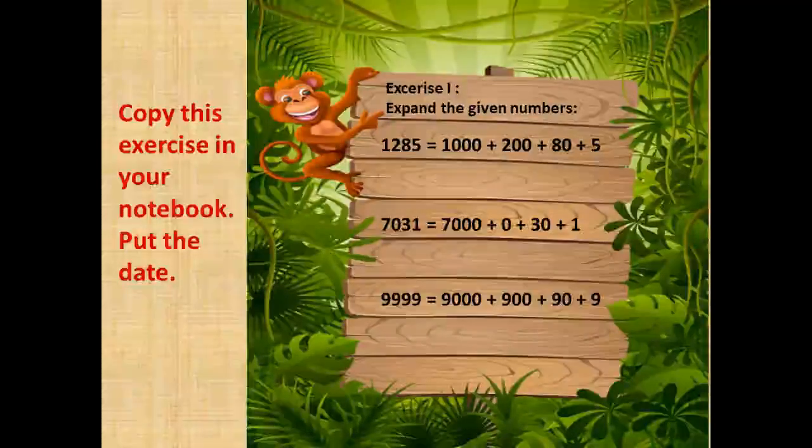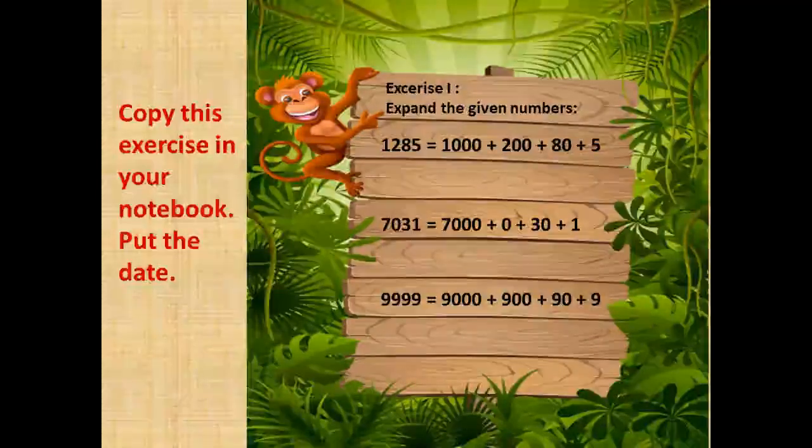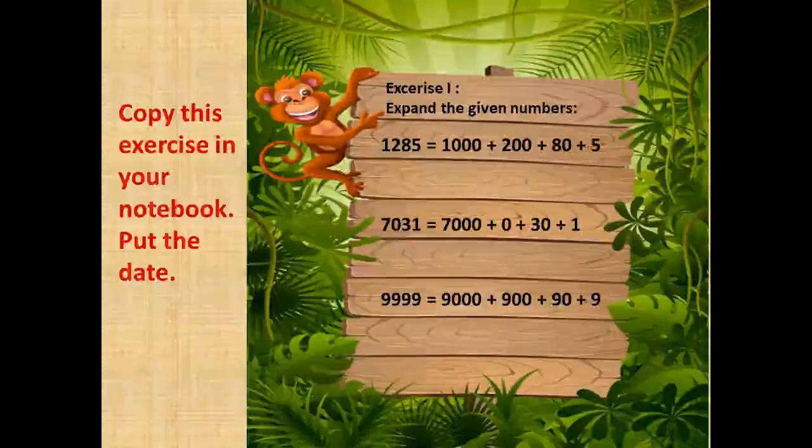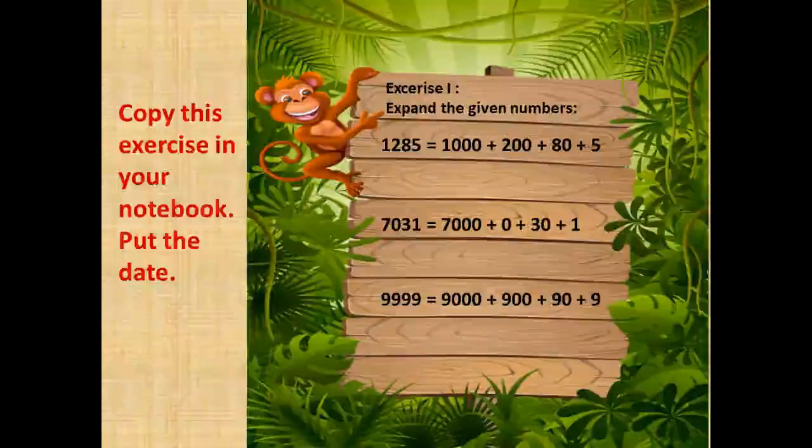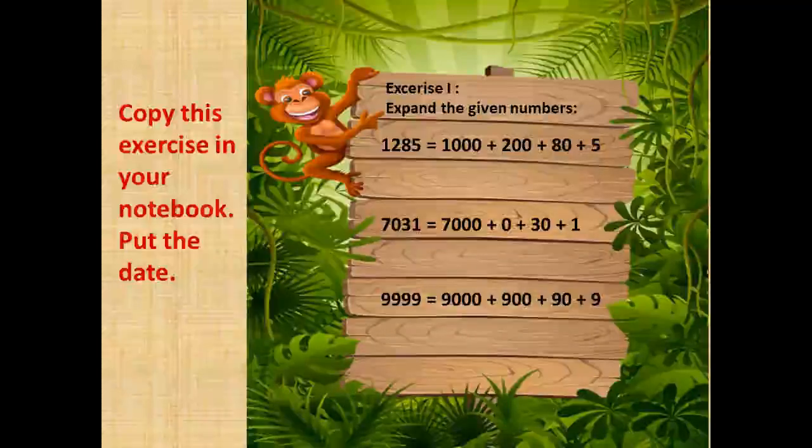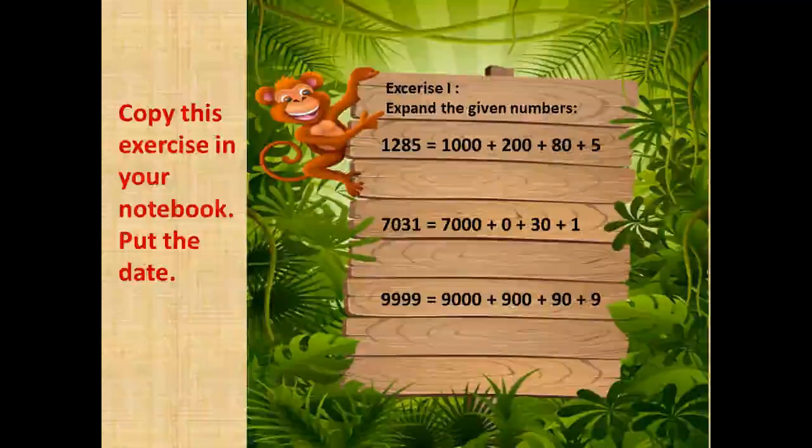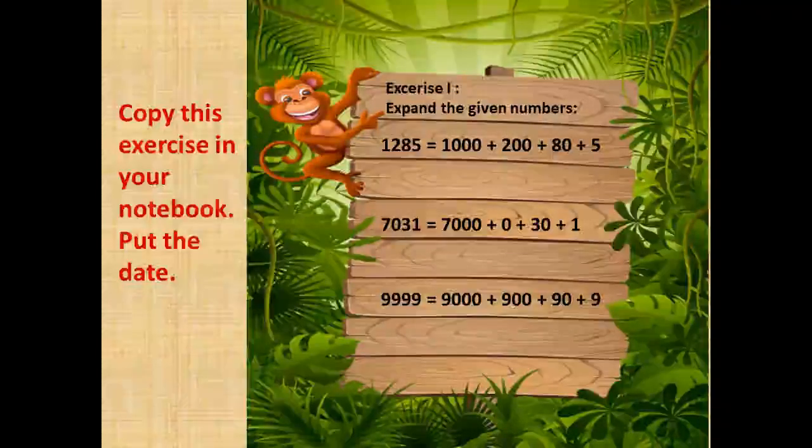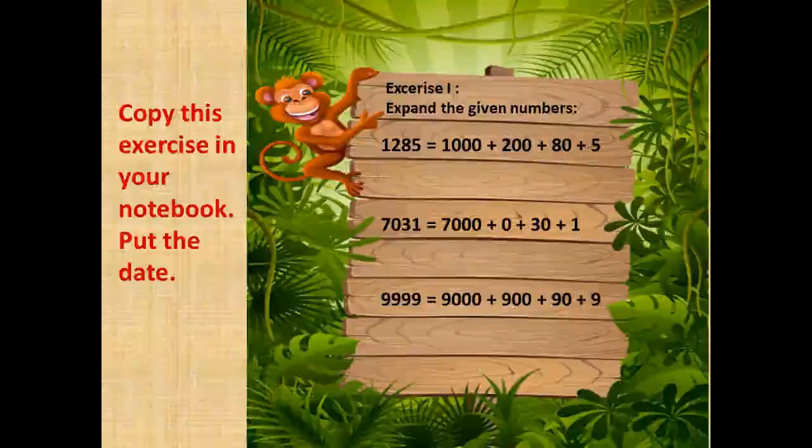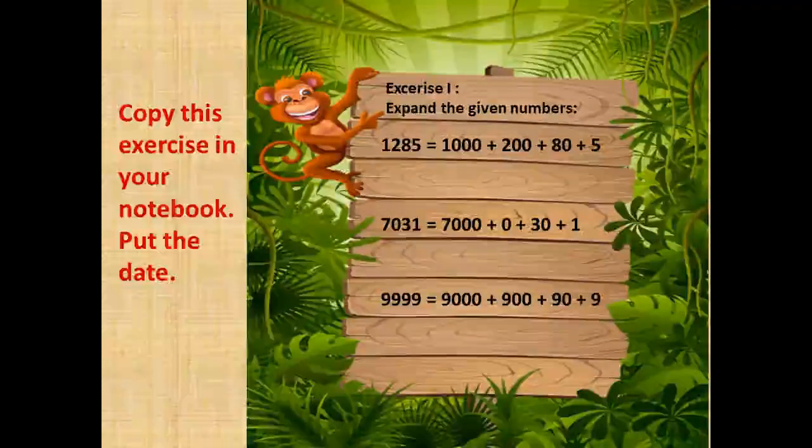The next number is 9,999, the biggest 4 digit number. We expand it and we write it as 9,000 plus 900, plus 90, plus 9.